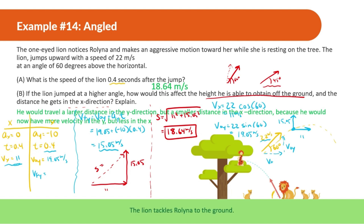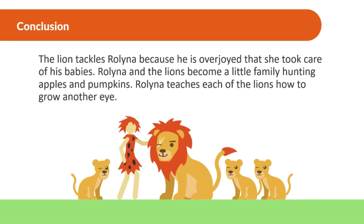The lion tackles Rowlina to the ground — it turns out he is overjoyed that she took care of his babies. Rowlina and the lions become a little family hunting for apples and pumpkins, and Rowlina teaches each of the lions how to grow another eye. That's the end of Part 2. Next time we'll be finishing with advanced problems — thanks for watching, everyone.